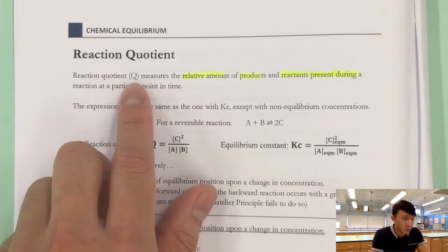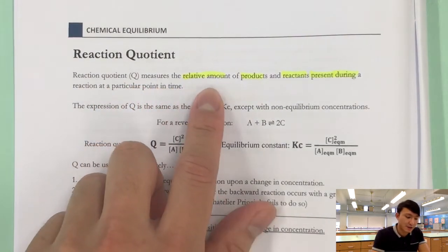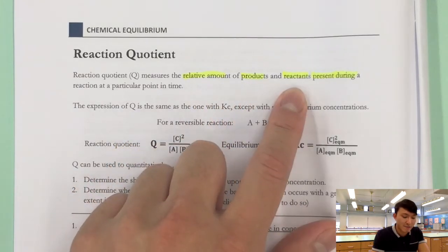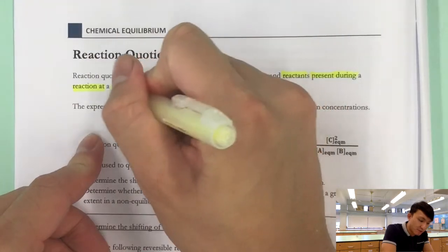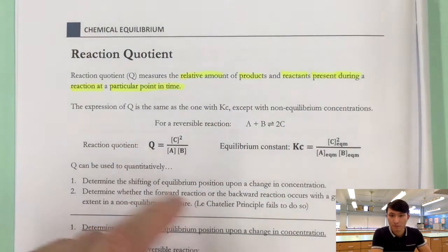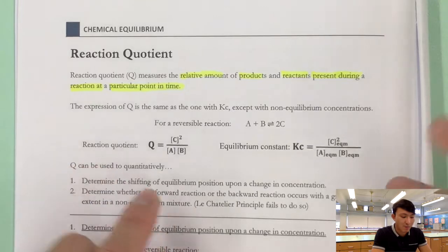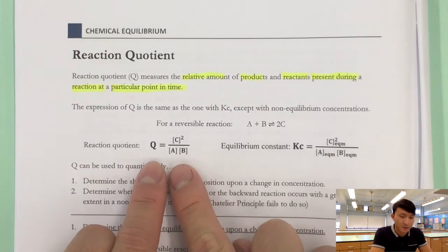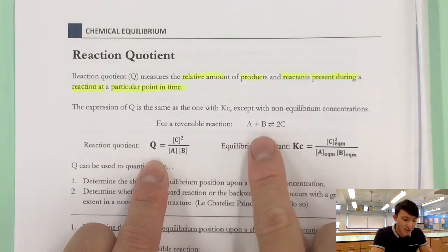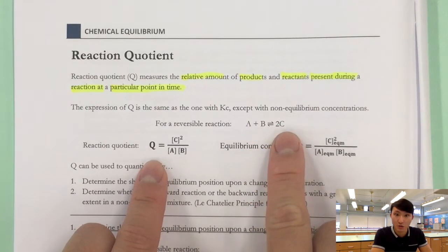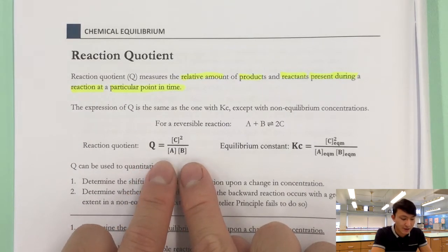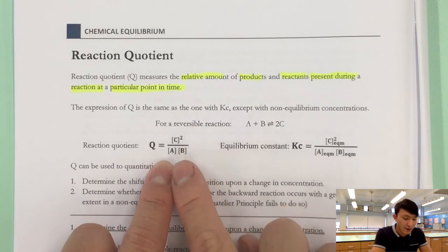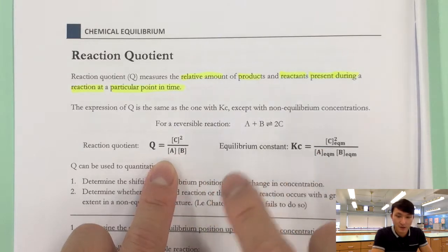The reaction quotient is something that measures the relative amount of product and reactant present during a reaction at a particular point in time. Let's look at the expression for reaction quotient. For a reaction A + B forming 2C, Q — the reaction quotient — is calculated as [C]² over [A][B], where all of these are concentrations.